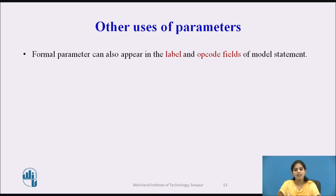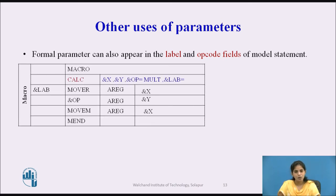The last type is other uses of parameters. We know parameters normally appear in the operand field, but a formal parameter can also appear in the label and opcode field of a model statement. In this example, the macro name is CALC with four parameters: &X and &Y (positional), &OP=MULT (keyword with default), and &LAB= (keyword). Here &LAB appears in the label field and &OP appears in the opcode field.